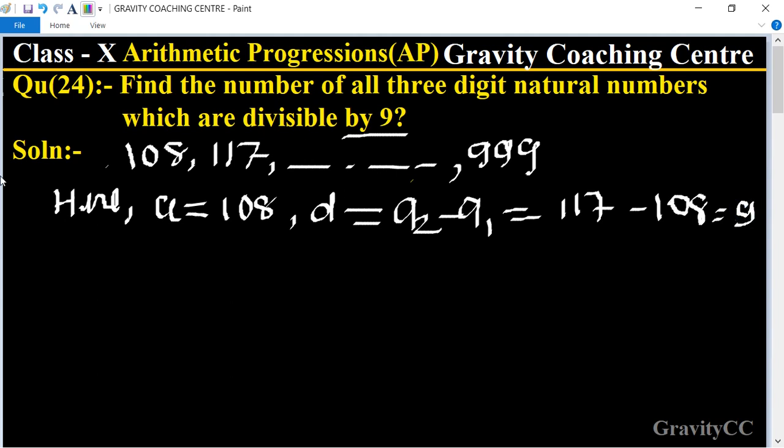To find the number of all three-digit numbers, we know the last term is 999 and the formula for nth term equals a plus (n minus 1)d equals 999.